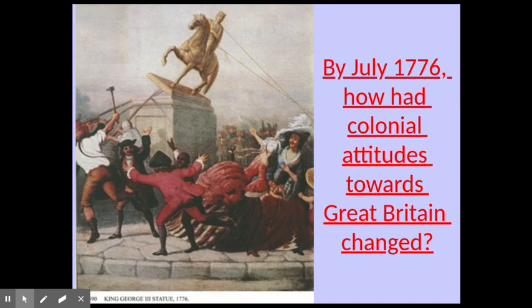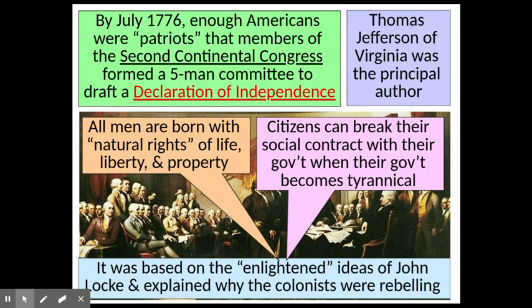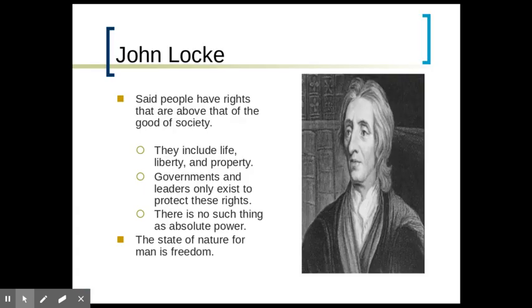By July 1776, colonial attitudes towards Great Britain had changed. They were taxing us, breaking up our colonial charters. Eventually enough patriots pushed forward to draft a Second Continental Congress, whose job was to write the Declaration of Independence. Thomas Jefferson became the principal author. Famous elements include the idea that all men are born with natural rights of life, liberty, and property, and that citizens can break their social contract with government when it becomes tyrannical — ideas based on the Enlightenment philosophy of John Locke.